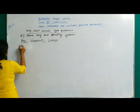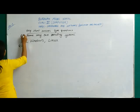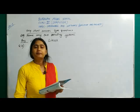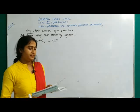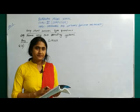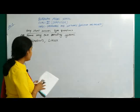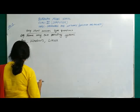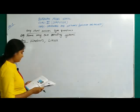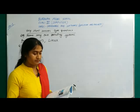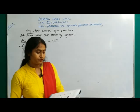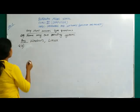Next question, question number 2A: Write the names of any 2 input devices. Mouse and keyboard are very common input devices. Other input devices include joystick, web camera, microphone, and light pen. Any 2 common ones: mouse and keyboard.